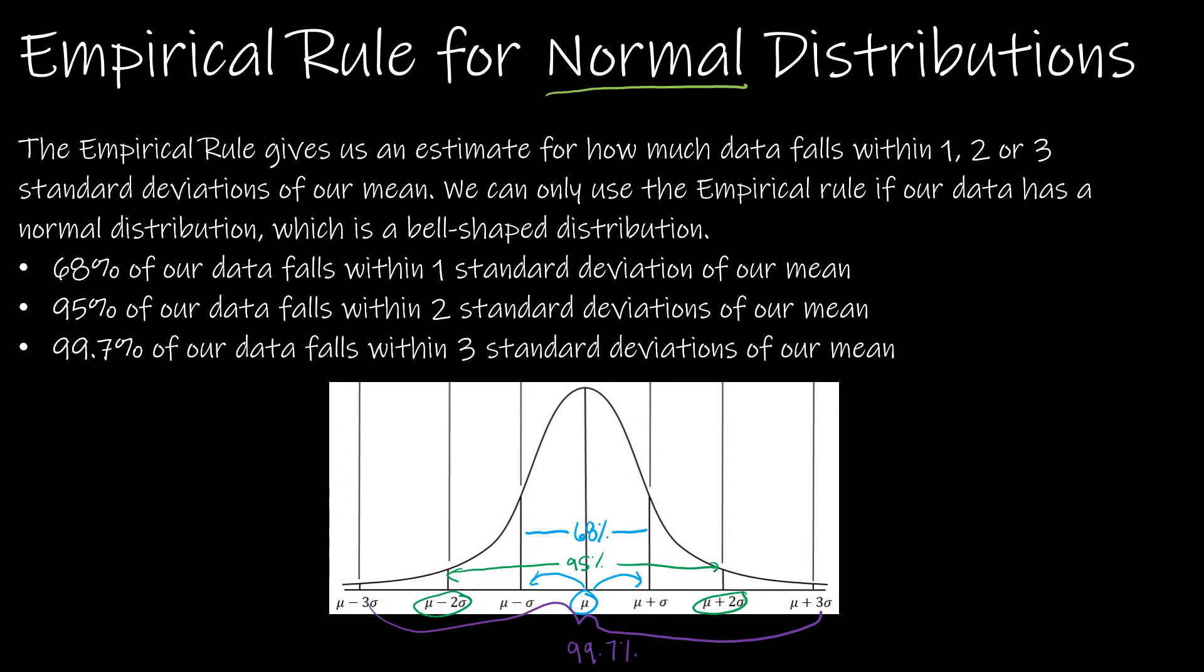And that will be based on these percentages. So for instance, if 68% falls between one standard deviation on either side, that means there's 34% on each side. If 95% falls within two standard deviations, that means from the mean to two standard deviations away is 47.5% on either side, and so on. And that's the kind of math that you're going to be using when you look at the next questions.